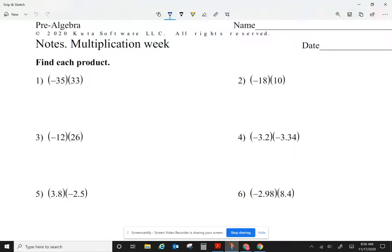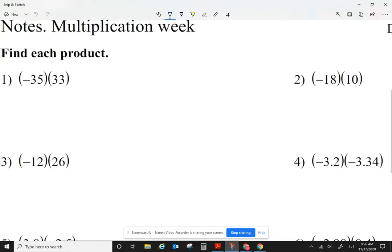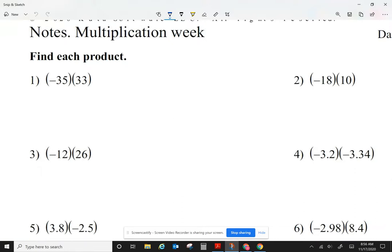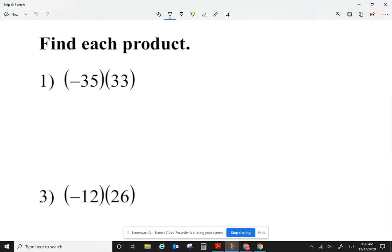We're going to start by looking at multiplying integers. An integer is a whole number that could have a positive or a negative sign. We're going to be looking at example number 1, negative 35 times 33. Find each product, so basically just multiply.